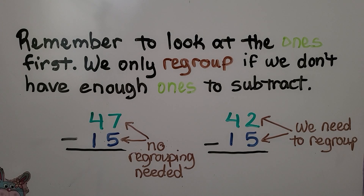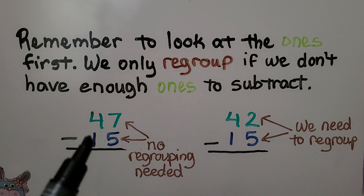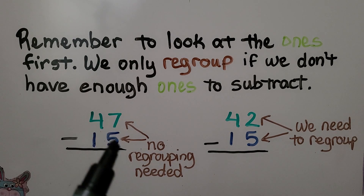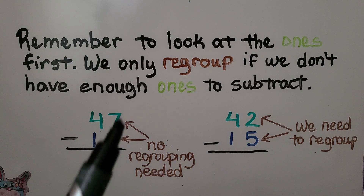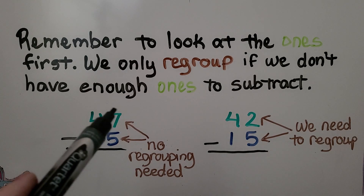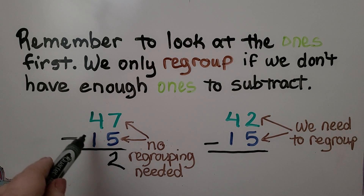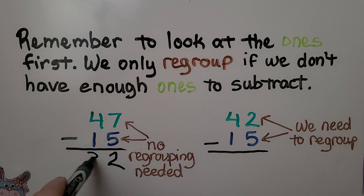Remember to look at the ones first. We only regroup if we don't have enough ones to subtract. We have 47 minus 15. We have seven and we need to take five away — we can do that. So there's no regrouping needed. We just do seven ones minus five ones, which is two ones. We do four tens minus one ten, which is three tens. It's equal to 32.